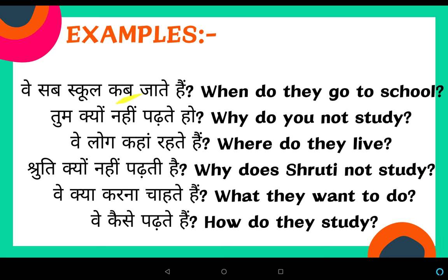'वे सब school कब जाते हैं?' — When do they go to school? 'तुम क्यों नहीं पढ़ते हो?' — Why do you not study? 'वे लोग कहाँ रहते हैं?' — Where do they live? 'श्रुति क्यों नहीं पढ़ती है?' — Why does Shruti not study? 'वे क्या करना चाहते हैं?' — What do they want to do? 'वे कैसे पढ़ते हैं?' — How do they study?